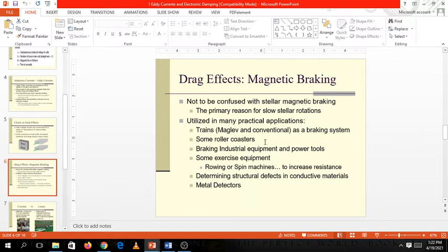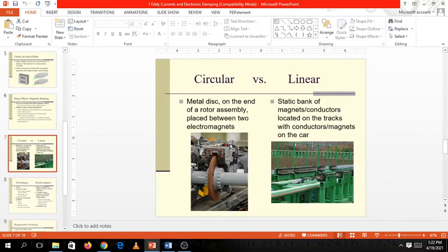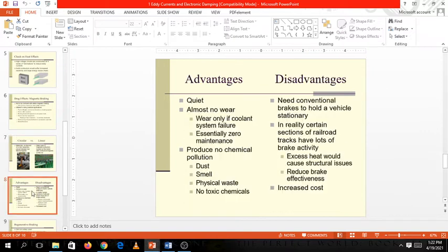Some roller coasters also make use of magnetic braking. The roller coasters railings, roller coasters are very fast and the track is curvy, circular motion, some braking industrial equipment, power tools, your metal detectors, the spin machines to increase resistance, and determining structural defects in conductive materials. So there are many ways actually to conduct this one. You have the circular, so metal disc on the end of a rotor assembly, and the linear, straight, static, bank of magnets, conductors located in the tracks with conductor magnets on the car. Usually, the roller coasters, and even some trains, make use of this linear braking.